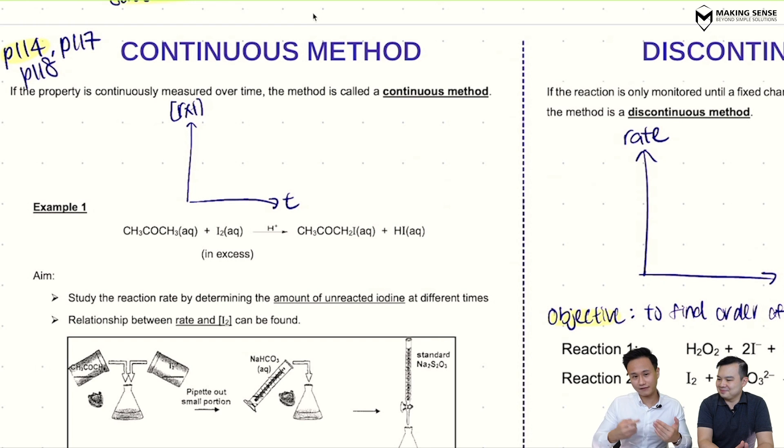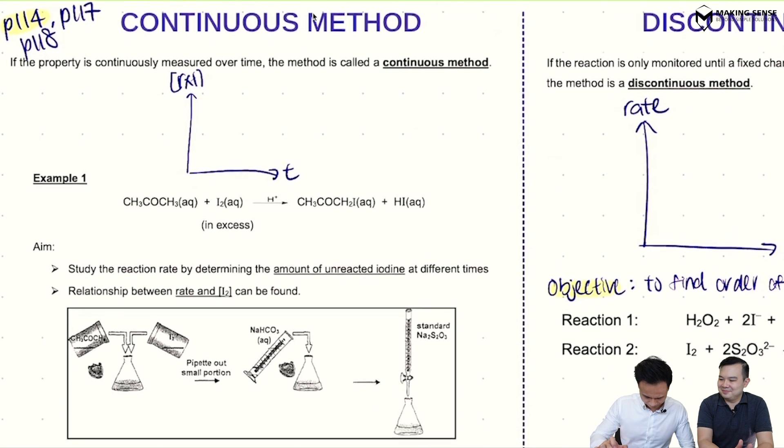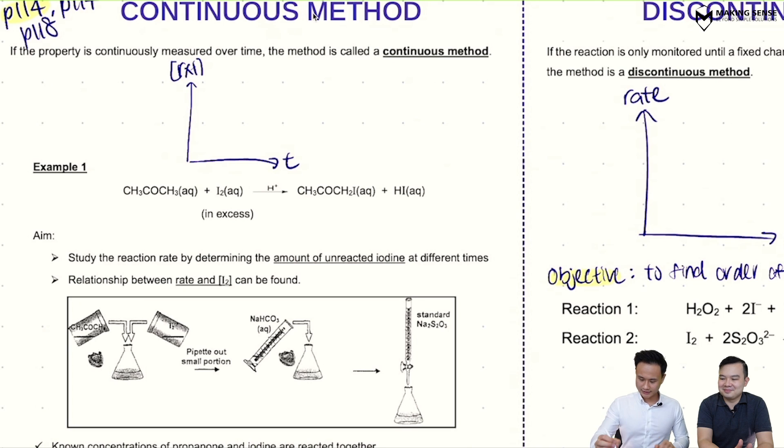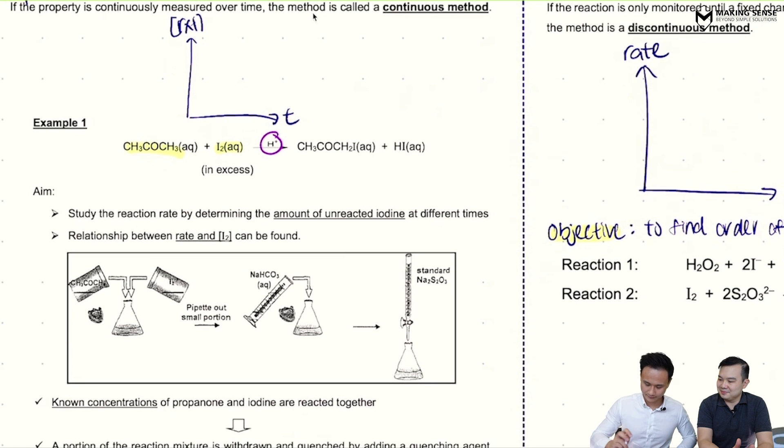So like what Mr. Leong said, this is a practical experiment. How do we apply this continuous method? We're going to take Example 1 and look at this. We are taking propanol and reacting with iodine in the presence of H+ catalyst. Again, our aim here is to find the order of reaction with respect to iodine.